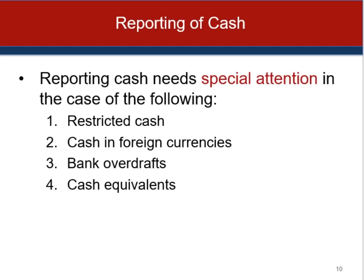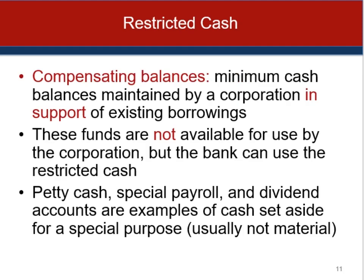The reporting of cash is relatively straightforward, but there are a number of issues that merit special attention: restricted cash, cash in foreign currencies, bank overdrafts, and cash equivalents. There are a number of ways that cash can be restricted. One is through a compensating balance arrangement to support existing borrowings — a way that banks can minimize the risk of lending money.